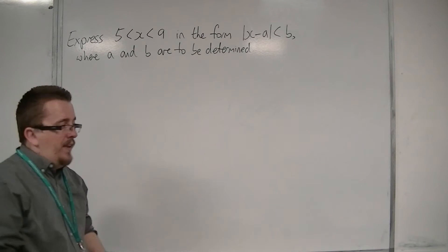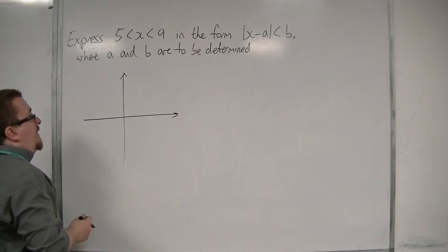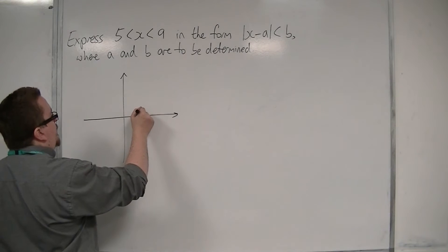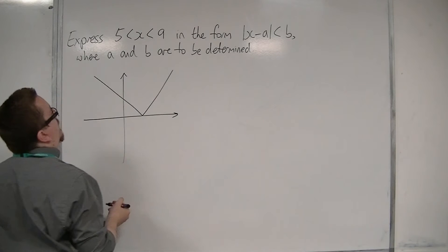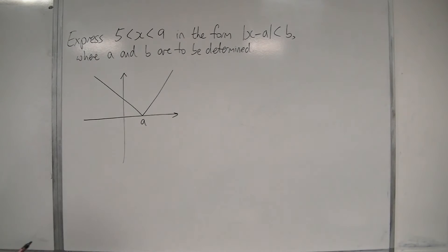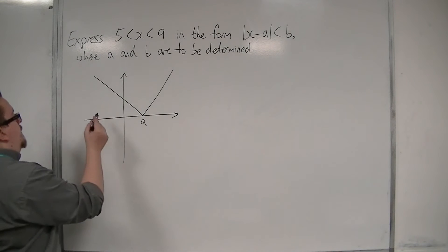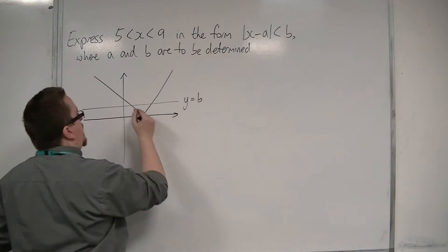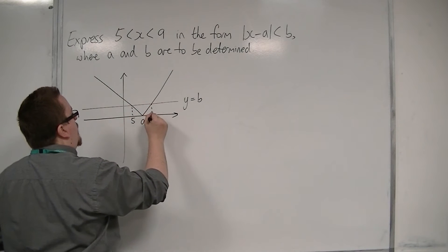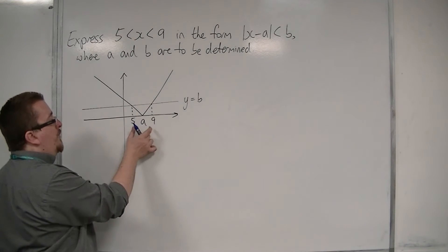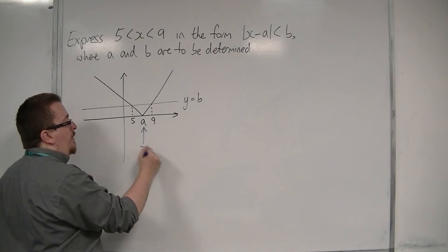First of all, let's see the graphical approach. What I would do is sketch mod of x minus a. Taking a to be positive, I'd be looking at something like this. So that's a. If I'm looking when x is between 5 and 9, then I must be looking at a line here, so y is b, where that point is 5 and that point is 9. So the a value must be halfway between 5 and 9, so a must be 7.